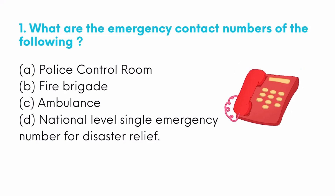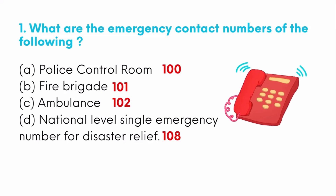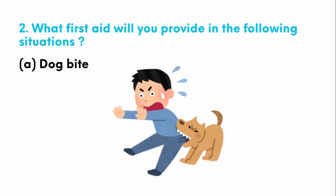The numbers are as follows: police control room is 100, fire brigade is 101, ambulance is 102, and the national level single emergency number for disaster relief is 108. The second question is: what first aid will you provide in the following situations? The first one is a dog bite.